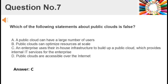Which of the following statements about public clouds is false? A. A public cloud can have a large number of users. B. Public clouds can optimize resources at scale. C. An enterprise uses their in-house infrastructure to build up a public cloud, which provides internal IT services for the enterprise. D. Public clouds are accessible over the internet. Answer: C.